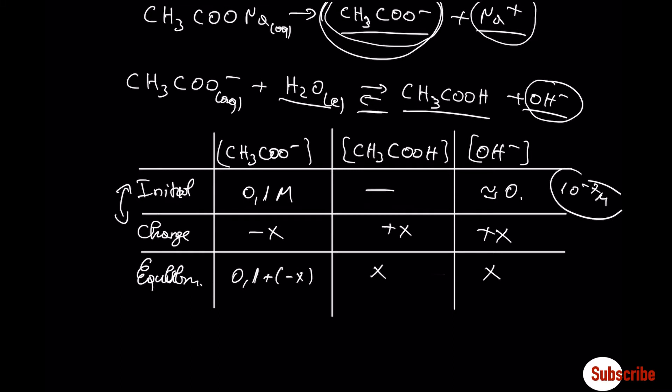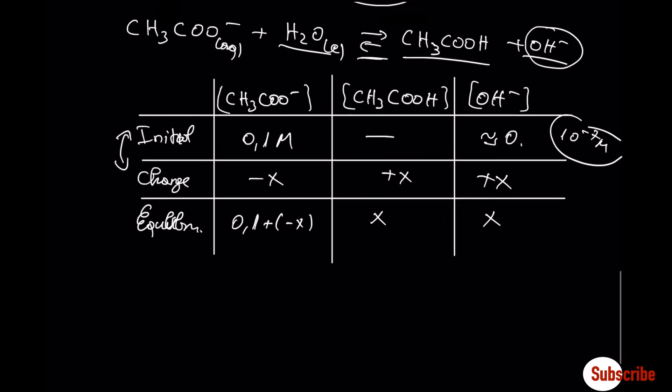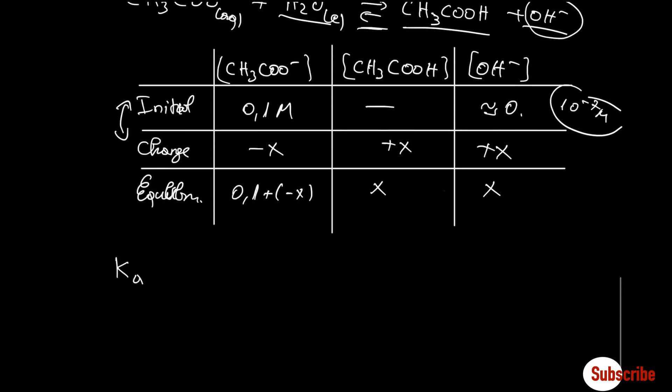Now the exercise gives us the Ka or the acid constant, but in our case we want the Kb, the conjugated base constant. In order to do that, there is a relation: Ka multiplied by Kb equals 10 to minus 14. This is valid only for the acids and its conjugated base, or a base and its conjugated acid. I mean weak base and weak acids.